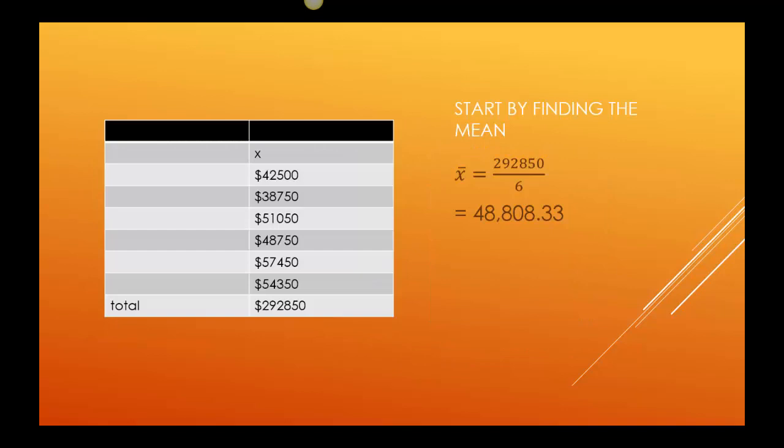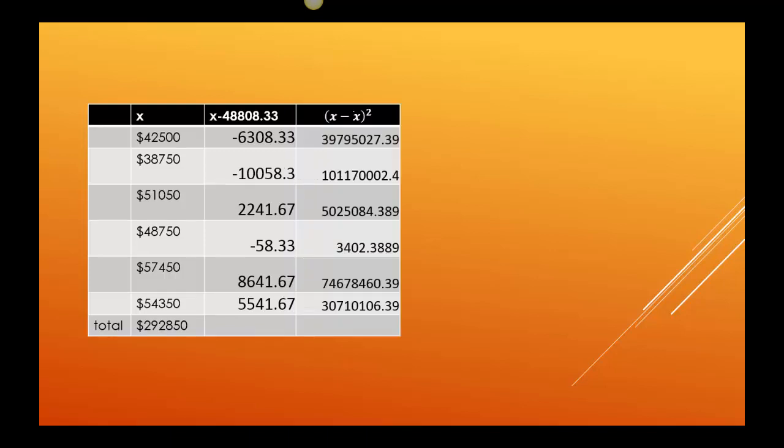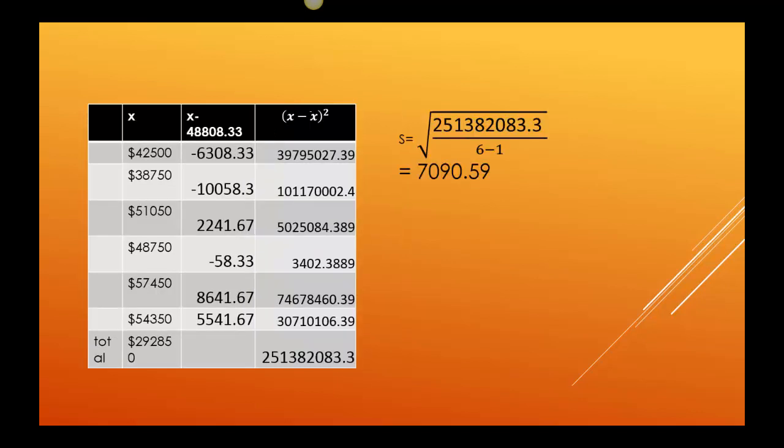So let me start you off by saying let's find the mean. So for the mean, I added up all the values and then I divide it by six. So it says the mean value of the cars is 48,808.33. Then, after I know the mean, I can subtract it from the value of the cars. So there's my next column. And I know that's not enough so I'm going to square them and it's going to give me some pretty big numbers. That's okay. After I square them, I can add them all together. And then I'm going to divide by six minus one, which is five, and take the square root. So this says my standard deviation is $7,090.59.